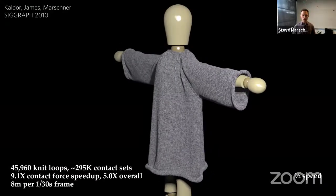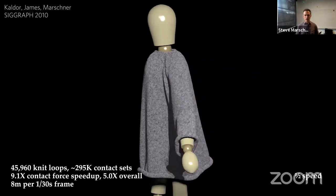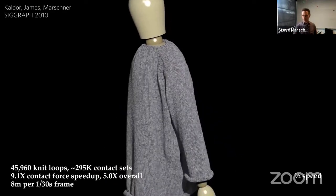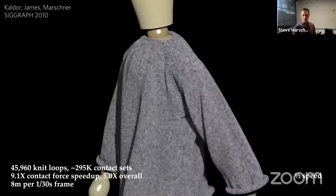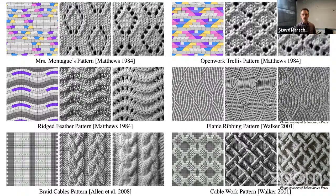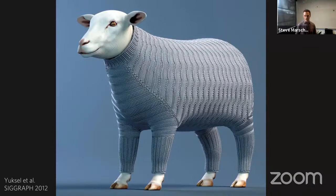Our initial motivation was to get very detailed animation so you could see all the structure and texture of the cloth and how it changes as you move around. We scaled this up to larger examples. Working with Cem Yuksel, we made techniques for very detailed knit patterns so you could have complicated structures that actually resemble real structures pretty closely. But at that time, our motivation was not to help make them, but to make better pictures of imaginary garments for imaginary creatures.